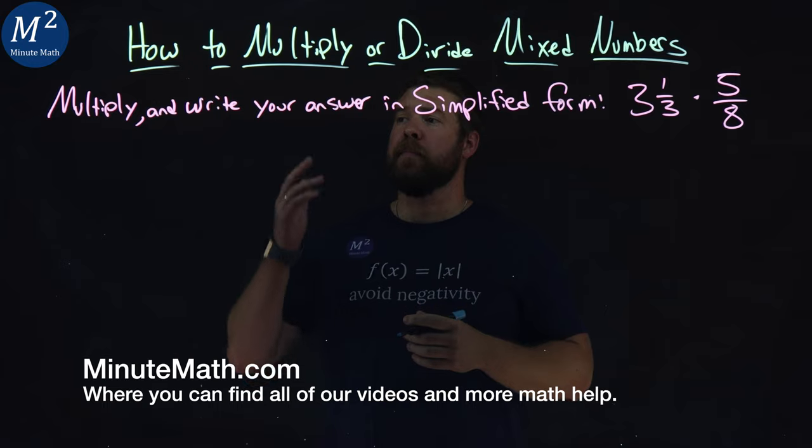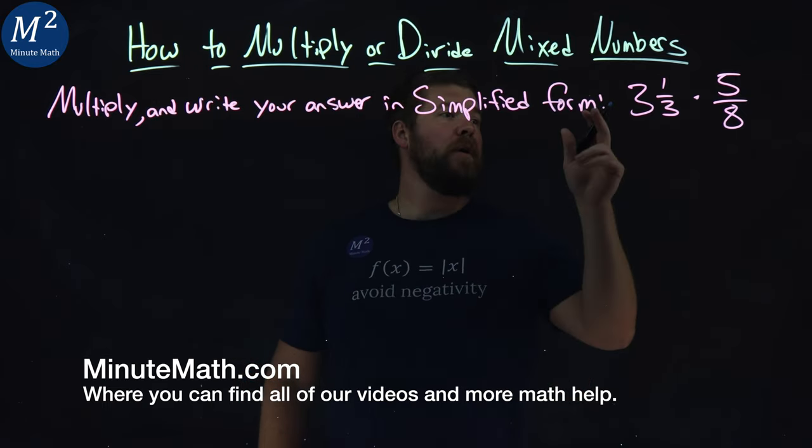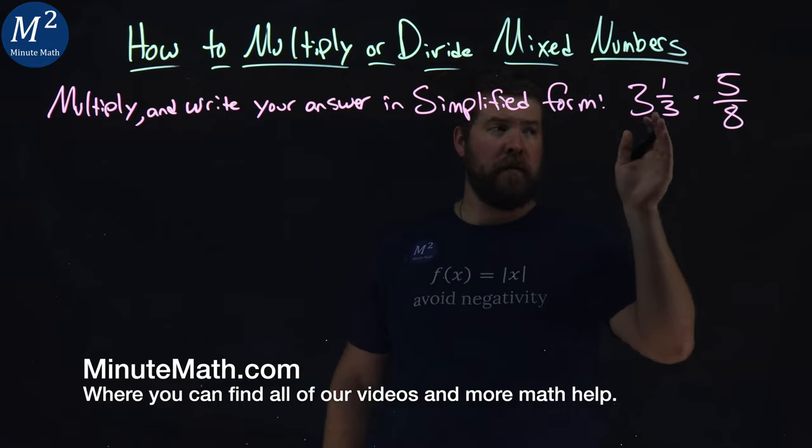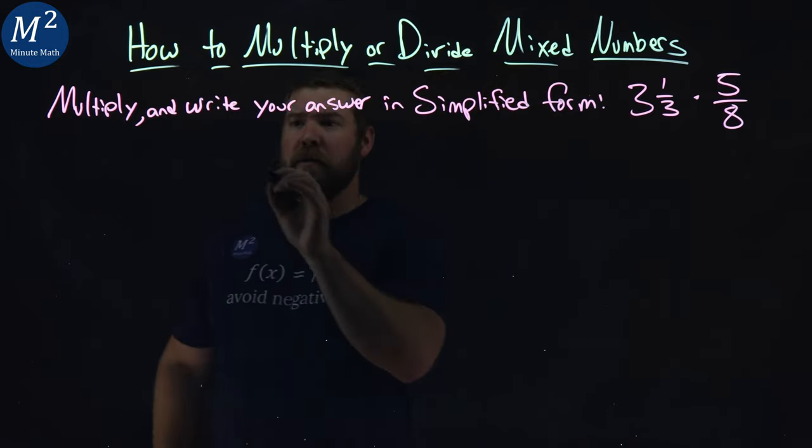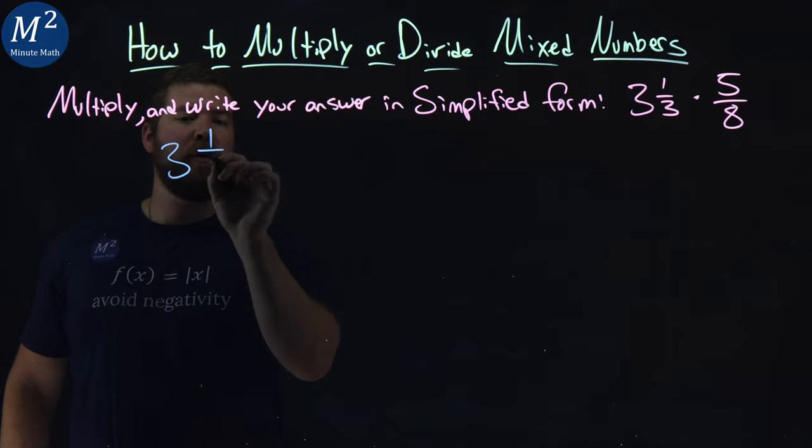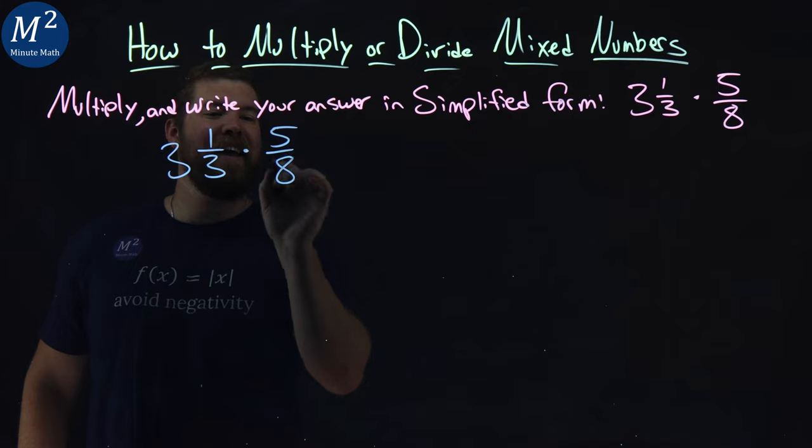We're given this problem here. Multiply and write your answer in simplified form: three and one-third times five-eighths. Let's rewrite our problem here so we can see what's going on. Three and one-third times five-eighths.